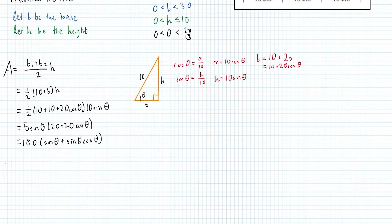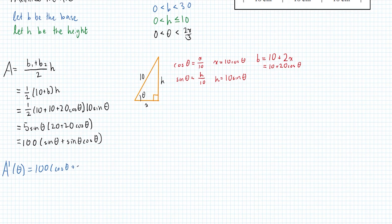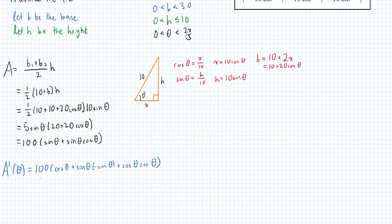The first derivative is equal to 100 times: derivative of sine is cos theta, then we apply the product rule — sine theta times derivative of cos plus the derivative of sine times cos theta. This gives us 100 times (cos theta plus cos squared theta minus sine squared theta).